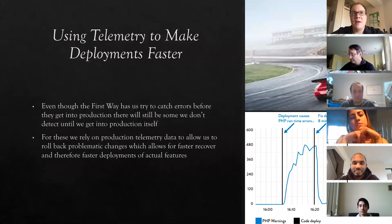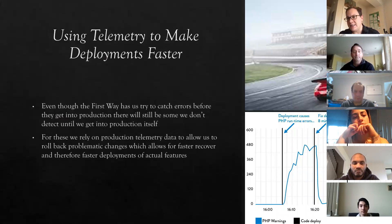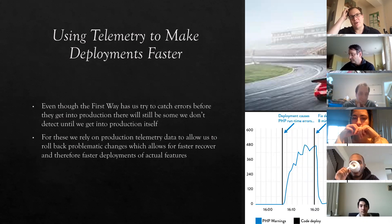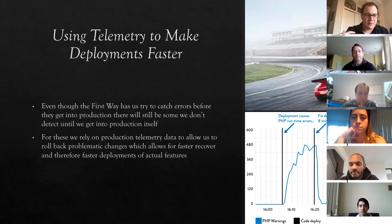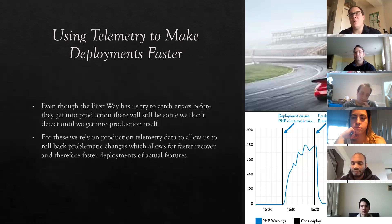Telemetry can also be used to make deployments faster. Even though continuous delivery helps push things through quickly with automated testing and source control, things are still going to go wrong in production because no matter how production-like you make a system, it's never going to completely simulate what it's like when actual users are using it or when it's integrated with all the different systems. When we have good telemetry data, it allows us to identify really quickly when a change has broken something and get it fixed.